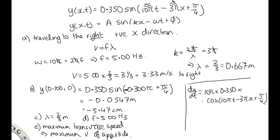Now it wanted to know the maximum transverse speed. The maximum is going to occur when this cos function is equal to 1, because that's the maximum the cos can be. So this will be 10π times 0.350 v max in the y direction, and this will be equal to 11.0 meters per second if you solve it on your calculator.